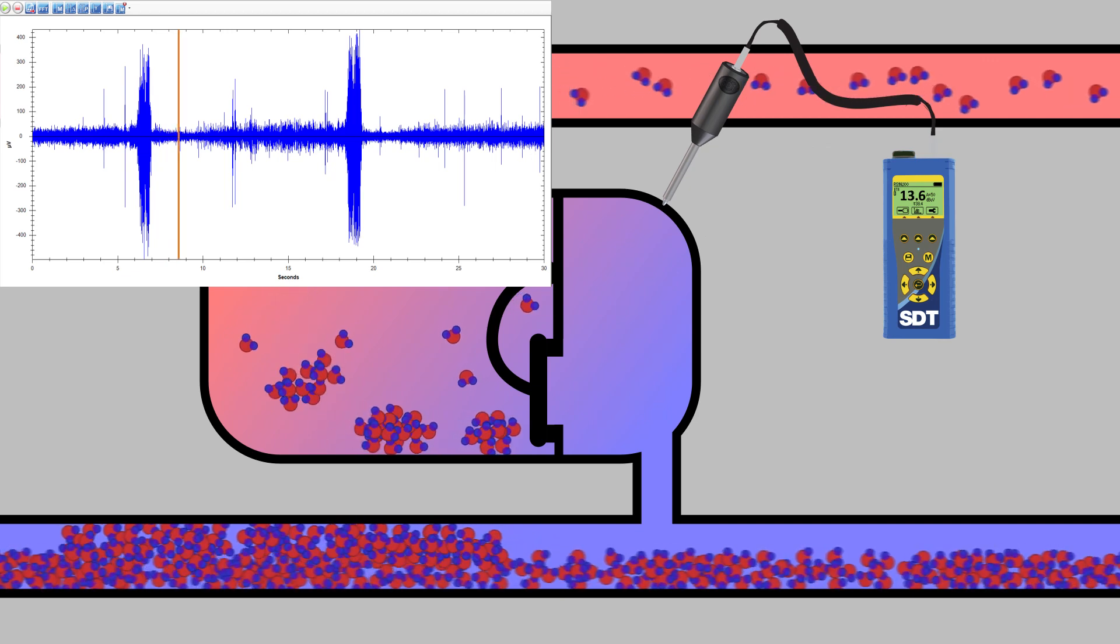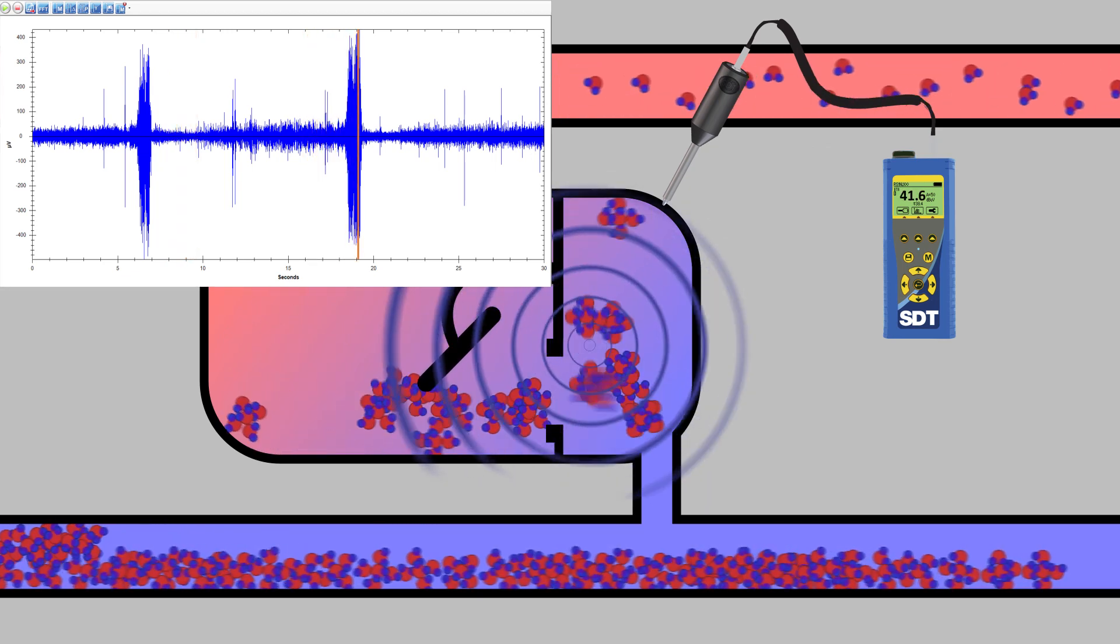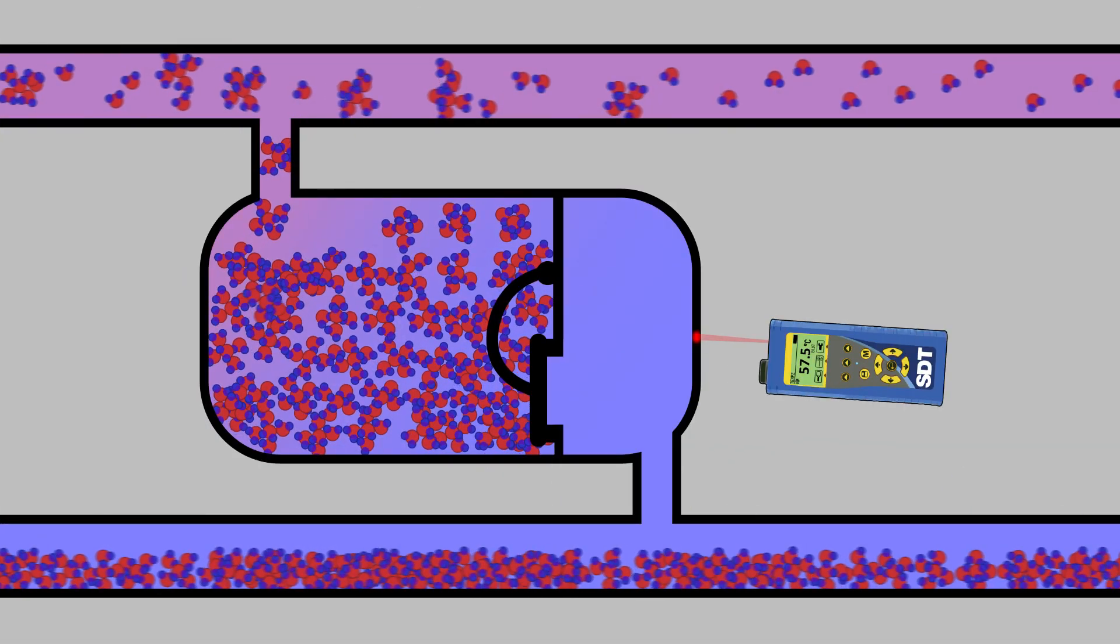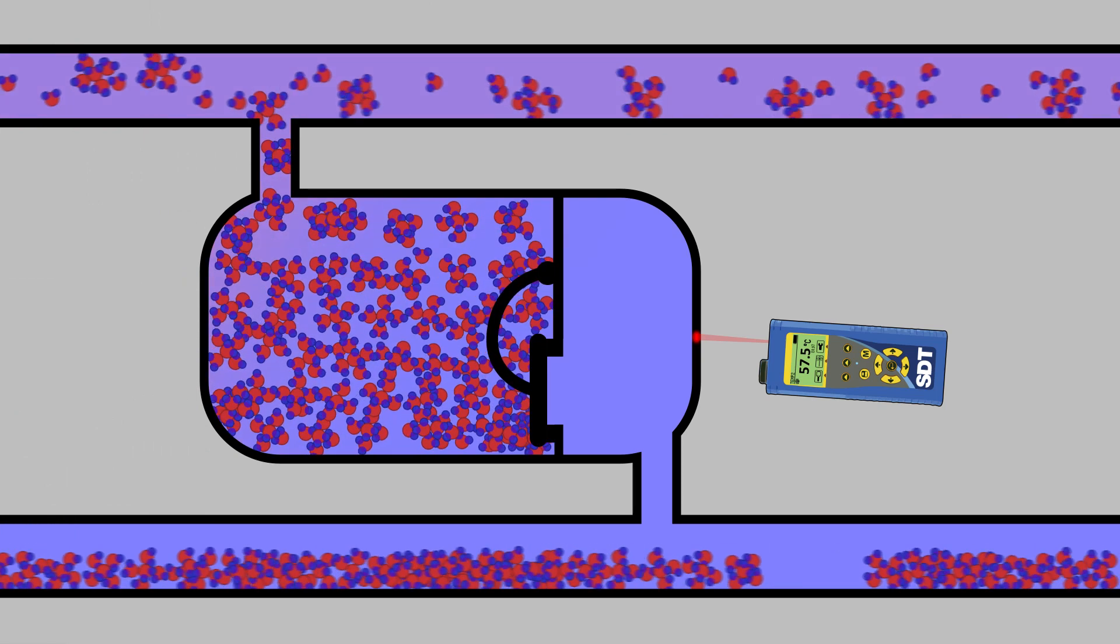Either the trap is closed and the signal is weak, or it's open and the signal is strong, becoming weak again when it closes. When a relatively constant signal is detected, the temperature measurements can be used to quickly detect if the trap has failed closed or open.